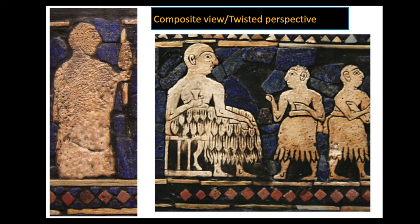Here we revisit the composite view, or twisted perspective, as we saw in some of the cave art from the Stone Age. It's a convention of representation in which part of a figure is shown in profile and another part of the same figure is shown frontally.